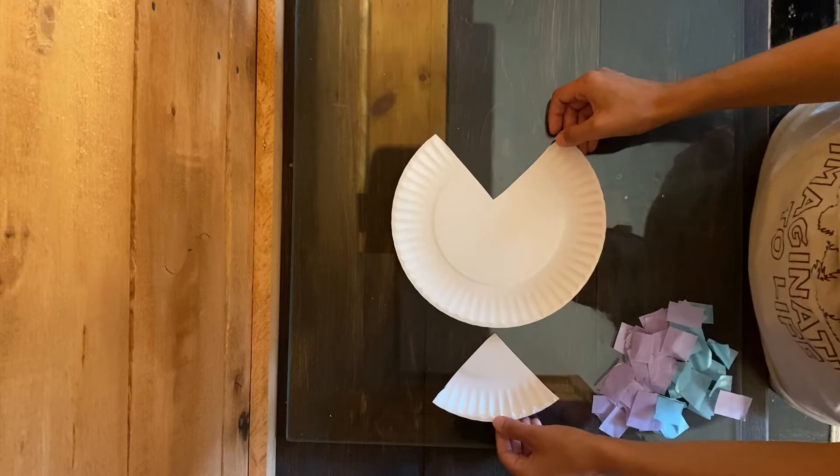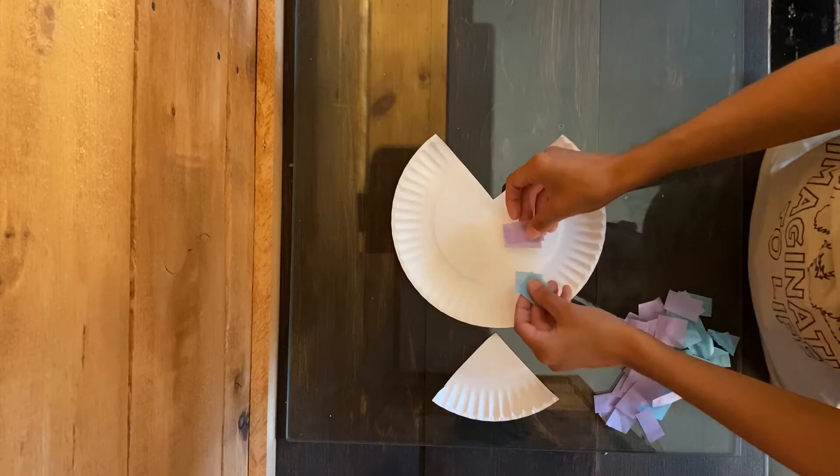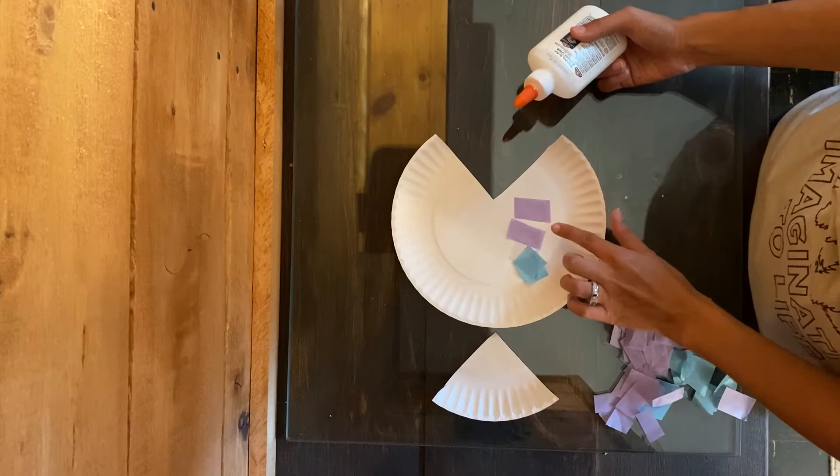We're going to take tissue paper, which I've cut into strips and squares, and then use our glue to glue them onto the plate for our fish and also the tail.